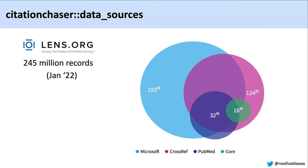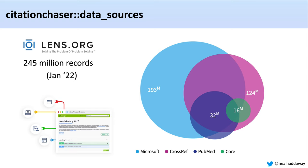We use the Lens.org database as our data source. Lens.org is a meta-database consisting of more than 245 million records as of January this year, aggregating across different sources of bibliographic data including Microsoft Academic Graph (until recently when it was retired), Crossref, PubMed, PubMed Central, and Core. Lens.org are actively looking into solutions for replacing Microsoft Academic Graph, such as OpenAlex. We make use of the Lens Scholarly API, which allows us to query the database automatically.